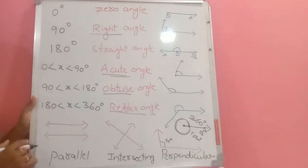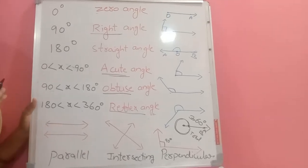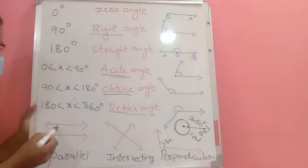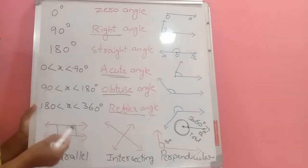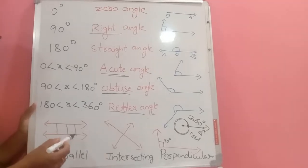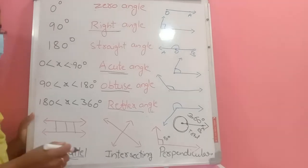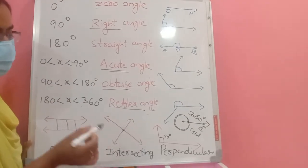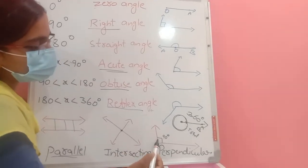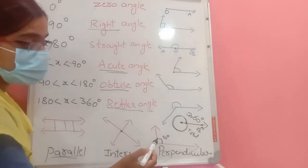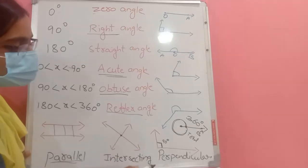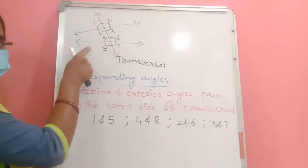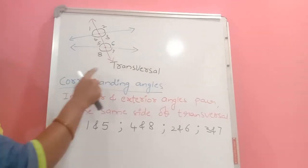If two lines have no common point and cannot intersect, they are called parallel lines. The distance between two parallel lines is always equal at any point. If two lines have only one common point, they are called intersecting lines. If two intersecting lines meet at a 90-degree angle, they are called perpendicular lines. If any line intersects two distinct lines at two distinct points, that line is called a transversal.